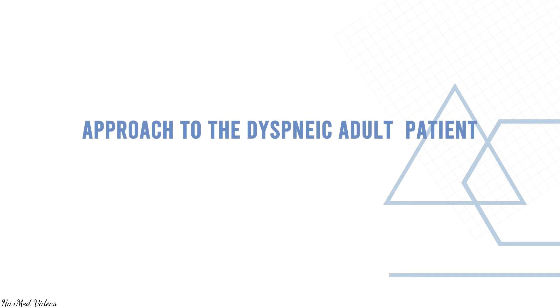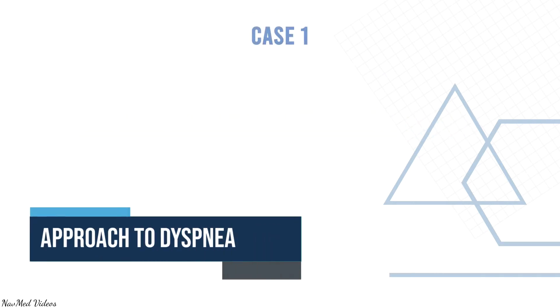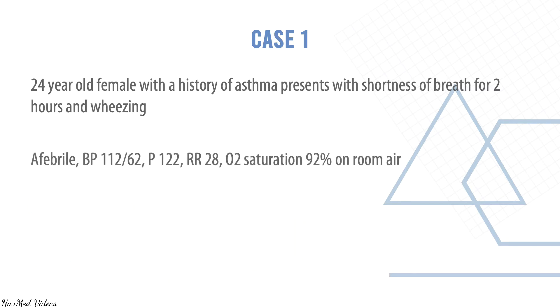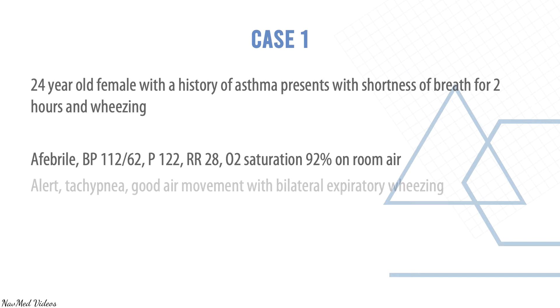Let's look at the approach to the dyspneic adult patient. Case one: a 24-year-old female with a history of asthma presents with shortness of breath for two hours and wheezing. She is afebrile, blood pressure 112/62, pulse 122, respiratory rate 28, oxygen saturation 92% on room air. Alert, tachypneic, good air movement with bilateral expiratory wheezing.